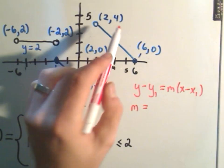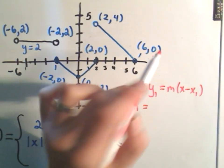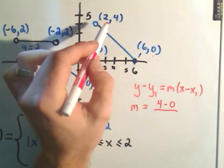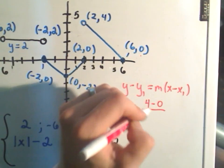Well, remember slope, we do change in y. So I'll take 4 minus 0. We have to subtract the x-coordinates over the change in x, 2 minus 6.